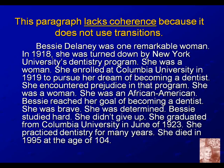This is a coherent paragraph. The supporting details are arranged carefully, and you can see that they were arranged in time order. We start way back in 1918 when she's just trying to get into dentistry school, then gradually follow her through her career all the way up to 1995 when she dies at the age of 104. That's time order. But there are places, because of the lack of transitions, that it sounds odd.